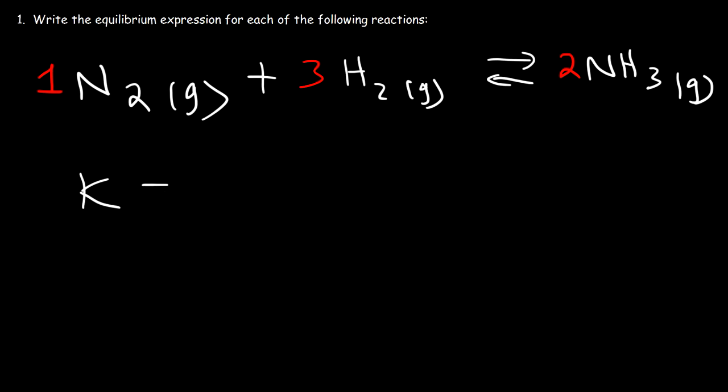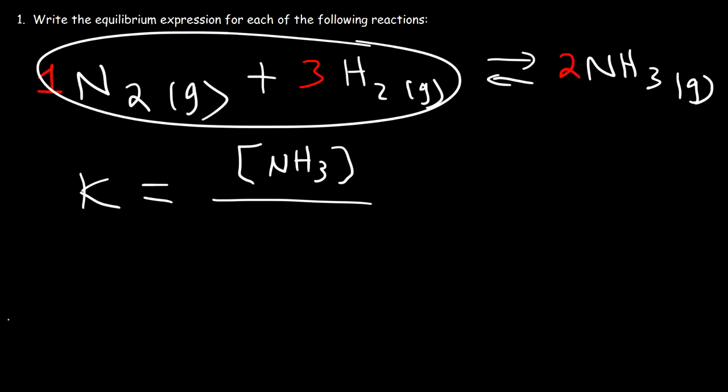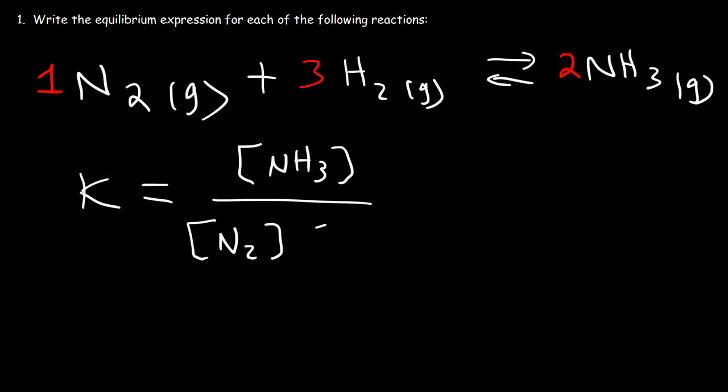So the law of mass action can be represented by this expression. K is going to be the ratio of the products divided by the reactants. So on the product side, which is the right side, we have ammonia. On the left side, the reactant side, we have the gases N2 and H2. Now the next thing that you need to know is that the coefficients in the balanced reaction become the exponents in the equilibrium expression.